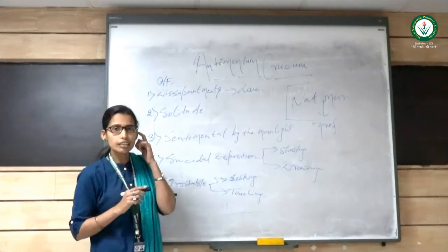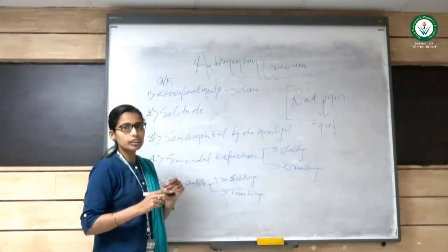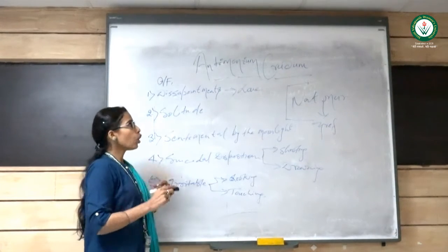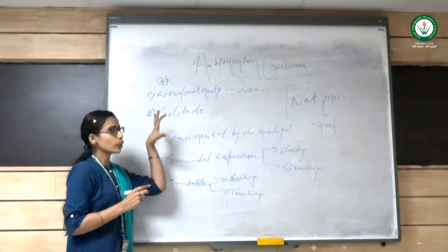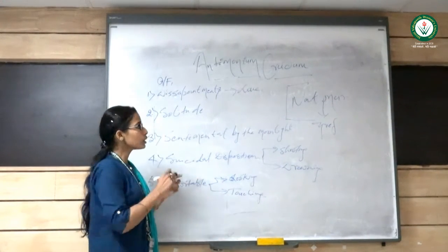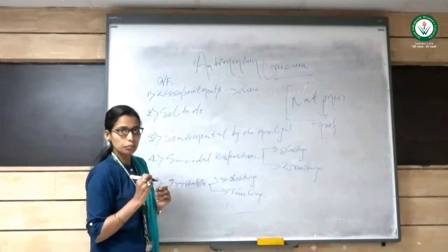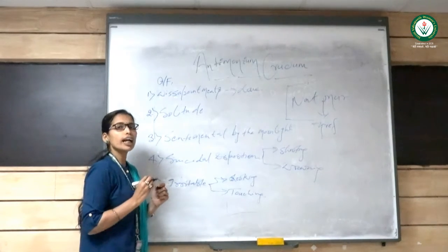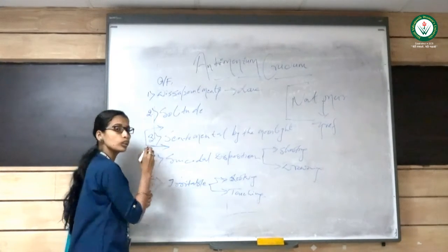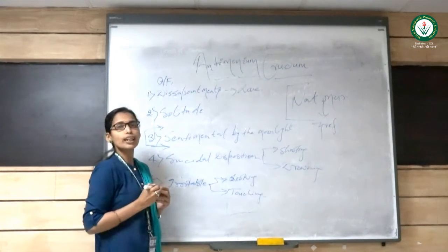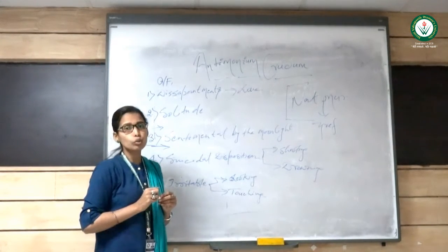Any kind of grief is going to be under Natrum mur. But if it is specifically after the loss, deceit, mistrust, or betrayal by the loved one, it comes under antimonial prudence. This is the basic difference. Although the symptoms or presentations are usually similar, one more dissimilarity is the sentimental mood by moonlight that you see in antimonial prudence is not present in Natrum mur patients.